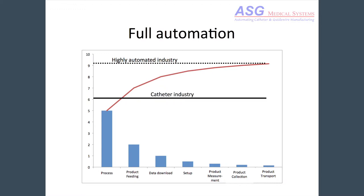So where is your factory today? Do you want to get higher on this scale? Most catheter factories are very low on this scale. They might have an automated process or some automated processes, but there's very little automated handling, setup, or data download, and nothing above that.